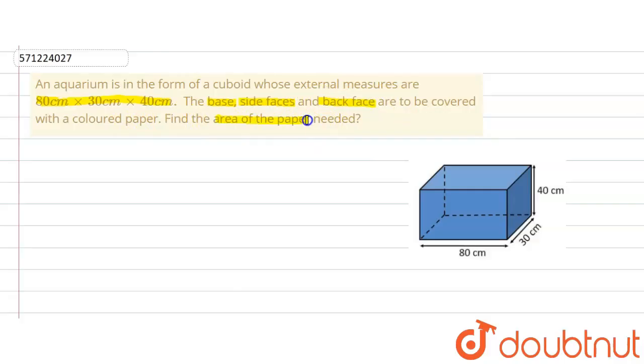We are supposed to find out the area of the paper needed to cover base, side faces and back face. Now this is a standard form of representing dimensions. 80 centimeter represents length, 30 breadth and 40 height. So let's first write down what has been given in the question.